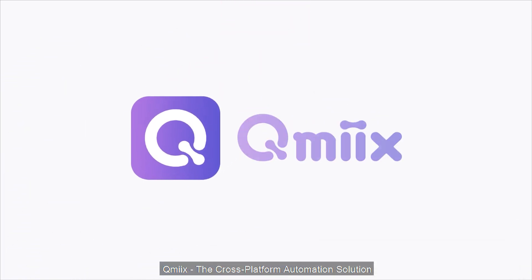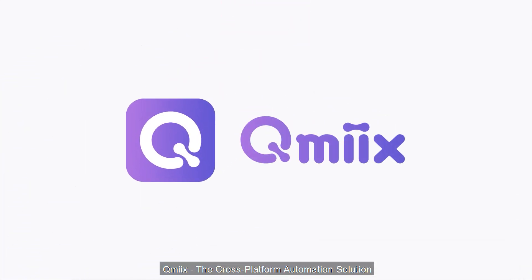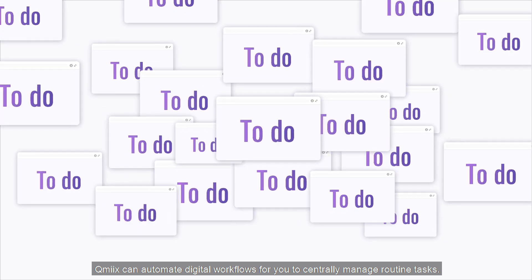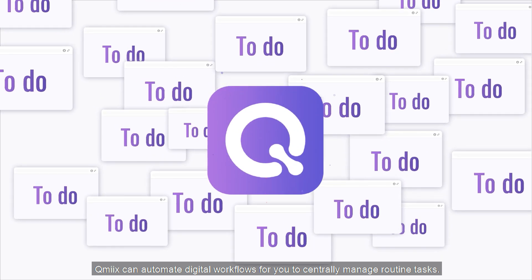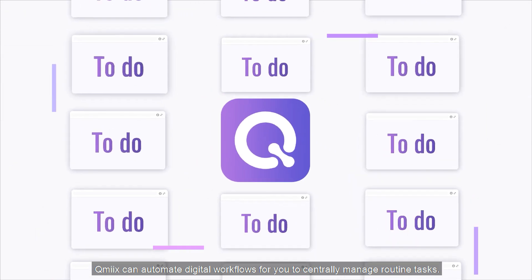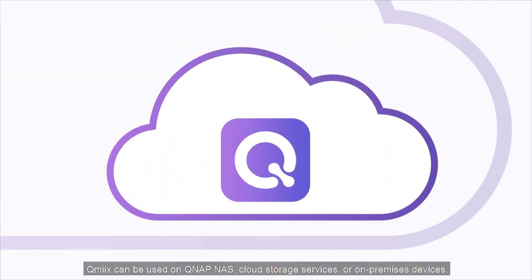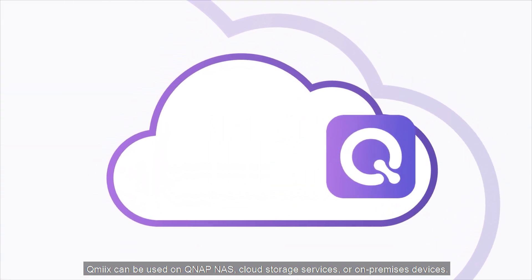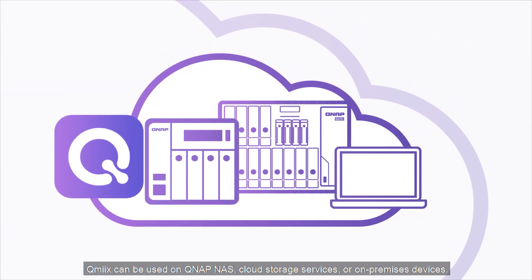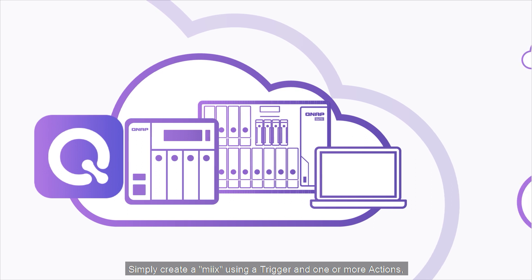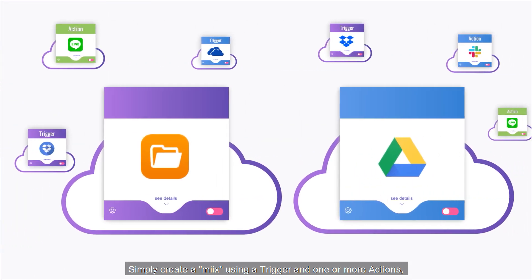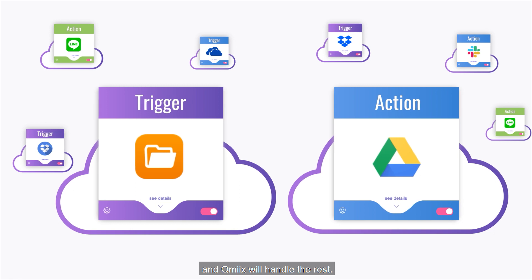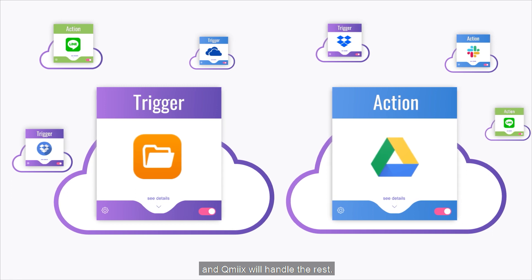QMix, the cross-platform automation solution. QMix can automate digital workflows for you to centrally manage routine tasks. QMix can be used on QNAP NAS, cloud storage services, or on-premises devices. Simply create a mix using a trigger and one or more actions, and QMix will handle the rest.